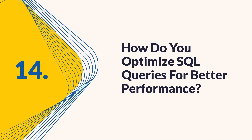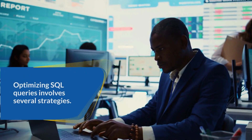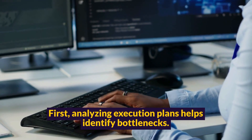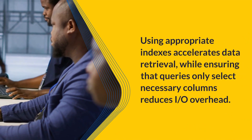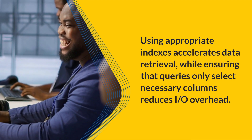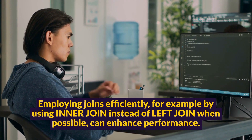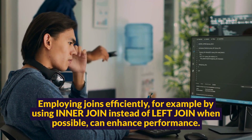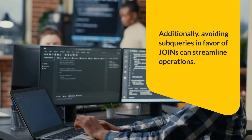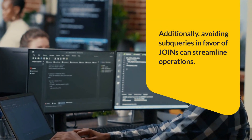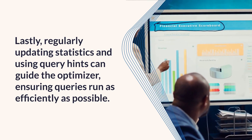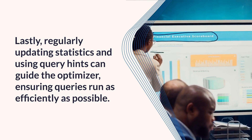Question 14: How do you optimize SQL queries for better performance? Optimizing SQL queries involves several strategies. First, analyzing execution plans helps identify bottlenecks. Using appropriate indexes accelerates data retrieval, while ensuring that queries only select necessary columns reduces I/O overhead. Employing joins efficiently — for example by using INNER JOIN instead of LEFT JOIN when possible — can enhance performance. Additionally, avoiding subqueries in favor of JOINs can streamline operations. Lastly, regularly updating statistics and using query hints can guide the optimizer, ensuring queries run as efficiently as possible.